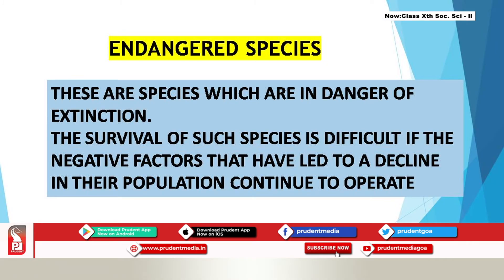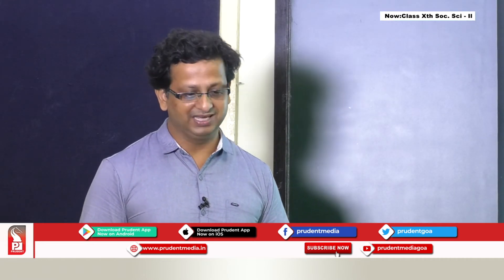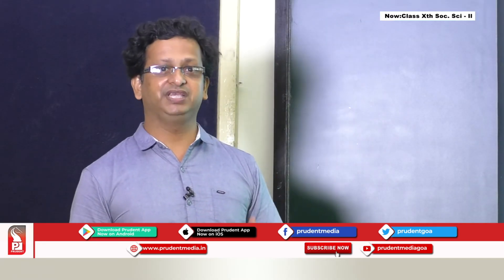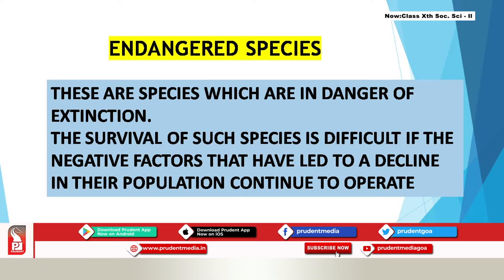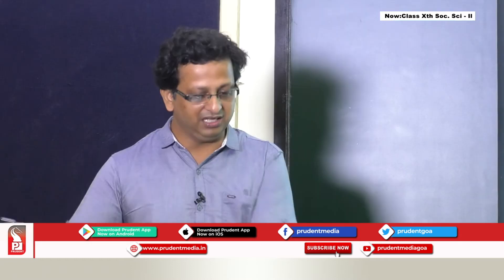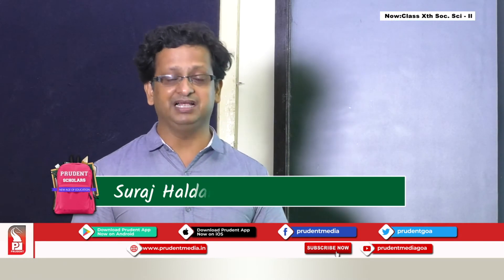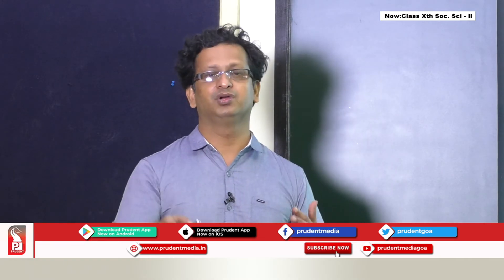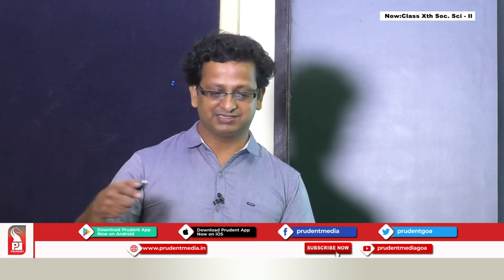Endangered species are those in danger of extinction. Survival of such species is difficult if the negative factors that have led to their population decline continue to operate. Examples include the black buck, wild Indian ass, Indian rhinoceros, lion-tailed macaque, and sangai.